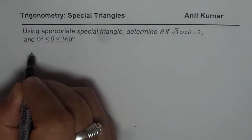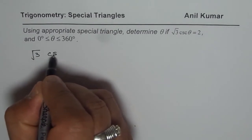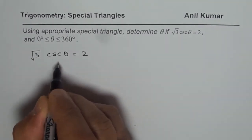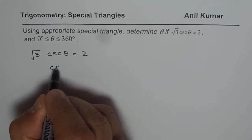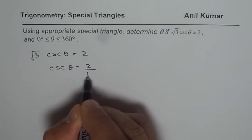Let us rewrite the equation. We have √3 csc θ = 2. Let us rearrange this, so we get csc θ = 2/√3.